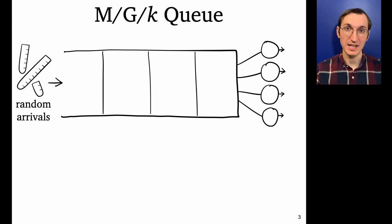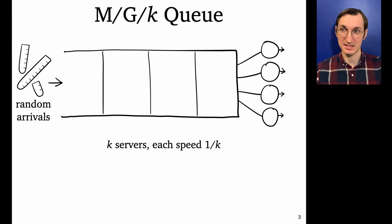Okay, so that's the M/G/1. The M/G/k is the same idea, but now we've got k servers instead of just one. And we're going to use the convention that each of these servers has speed 1 over k. So the total server speed is always 1, no matter what k is. And this means we always have the same stability condition, load must be less than 1.